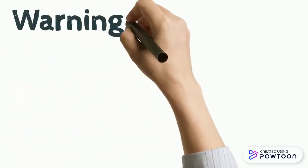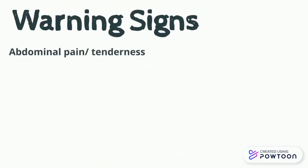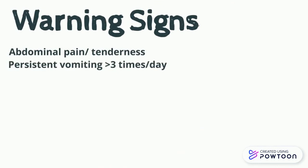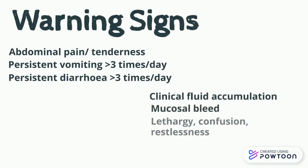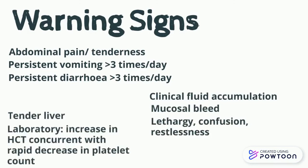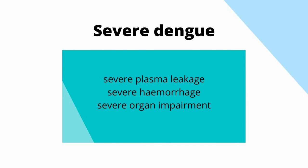Warning signs include abdominal pain or tenderness, which may indicate hepatitis; persistent vomiting more than three times a day; persistent diarrhea more than three times a day; any clinical fluid accumulation such as pulmonary edema or ascites; mucosal bleeding; lethargy, confusion, or restlessness involving the brain; tender liver; and laboratory findings such as an increase in hematocrit concurrent with a rapid decrease in platelet count, which is typically seen in Dengue fever. You should classify a patient as severe Dengue when you see severe plasma leakage, hemorrhage, or any organ impairment.